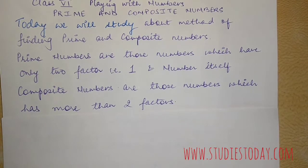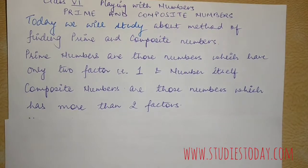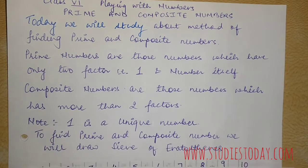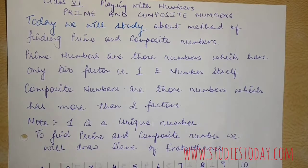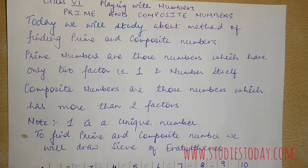There is a very good way of finding the prime numbers from 1 to 100. For that we will make a sieve of Eratosthenes, which will help us to find all the prime numbers from 1 to 100. We need to note one thing that 1 is always a unique number. It is not prime and it can also not be categorized as a composite number.